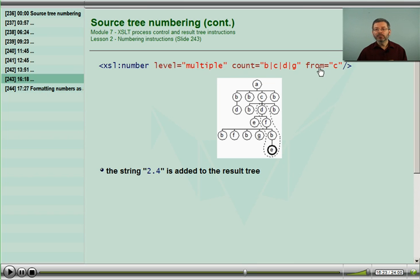Let's do a level equals multiple, but now add a from. It goes up the tree, finding the closest ancestral from, which is C, and begins down the tree below that ancestor. I'm now counting the same B, C, D, and G, but I'm starting from here. Is D being counted? Yes, it is. That's triggering a level equals single. In the level equals single, B's and D's are being counted, so a 2 is added to the result tree.